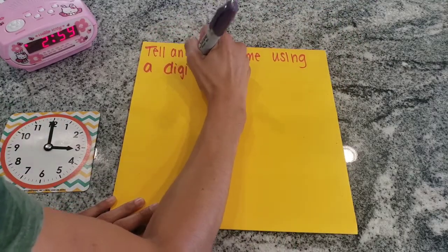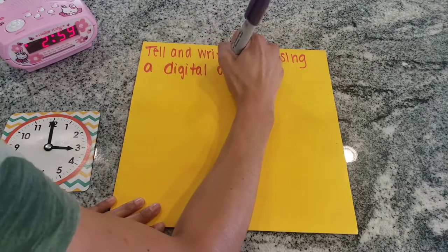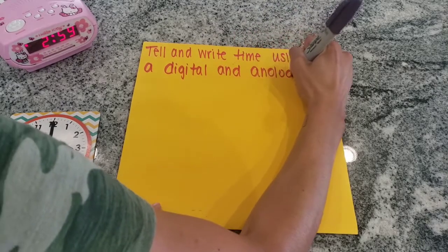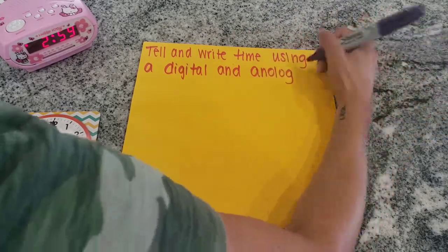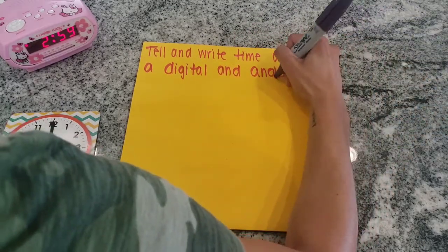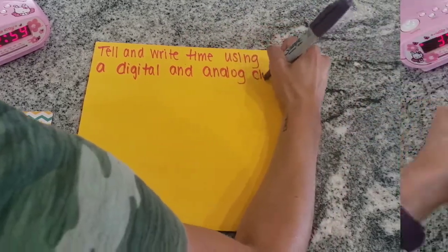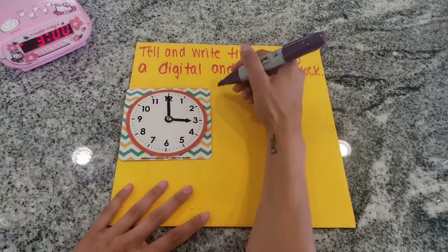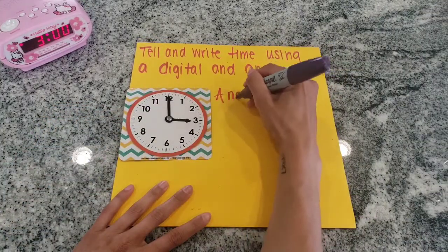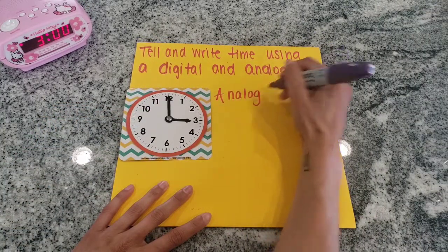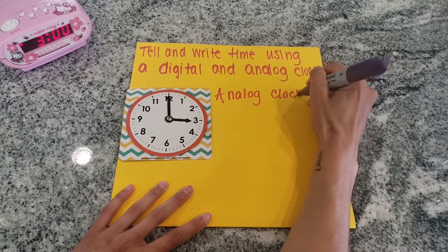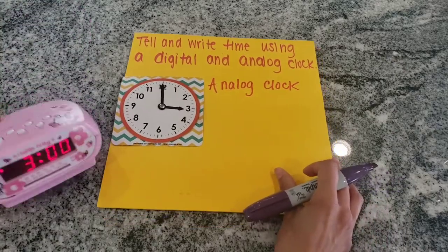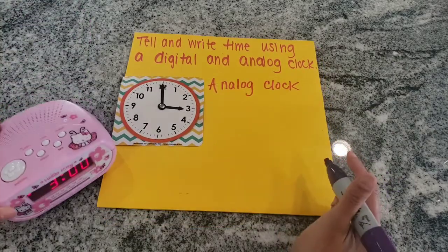Today we are going to tell and write time using a digital and analog clock. This is an analog clock. It has moving hands which point to the hour and the minute.